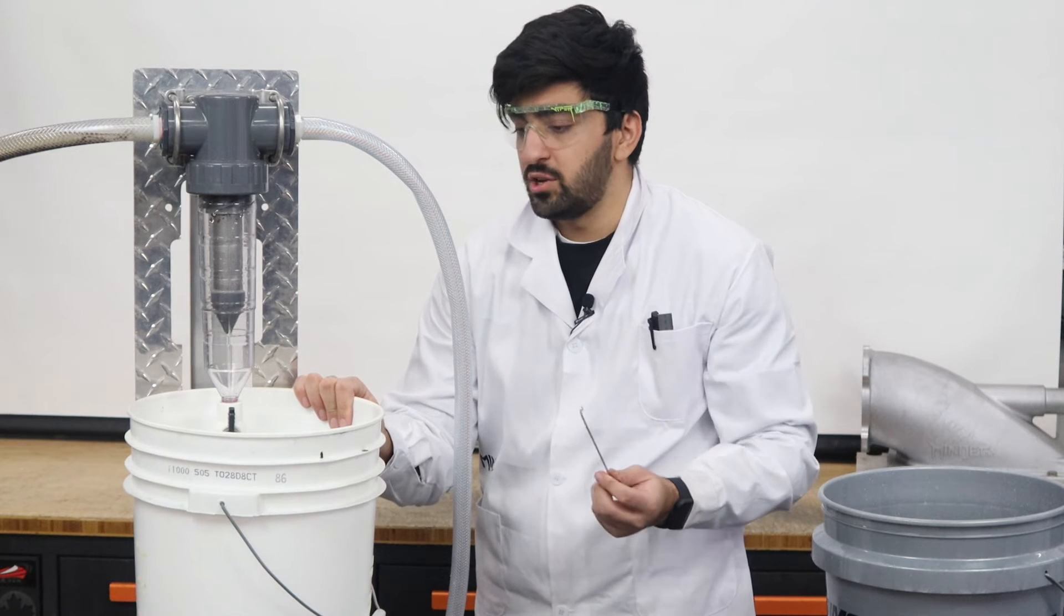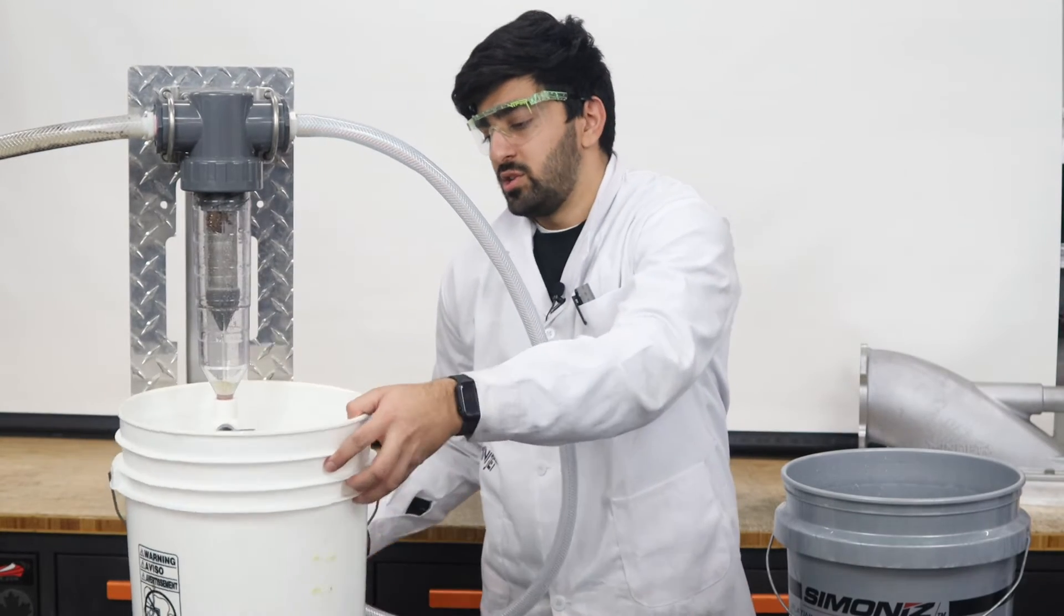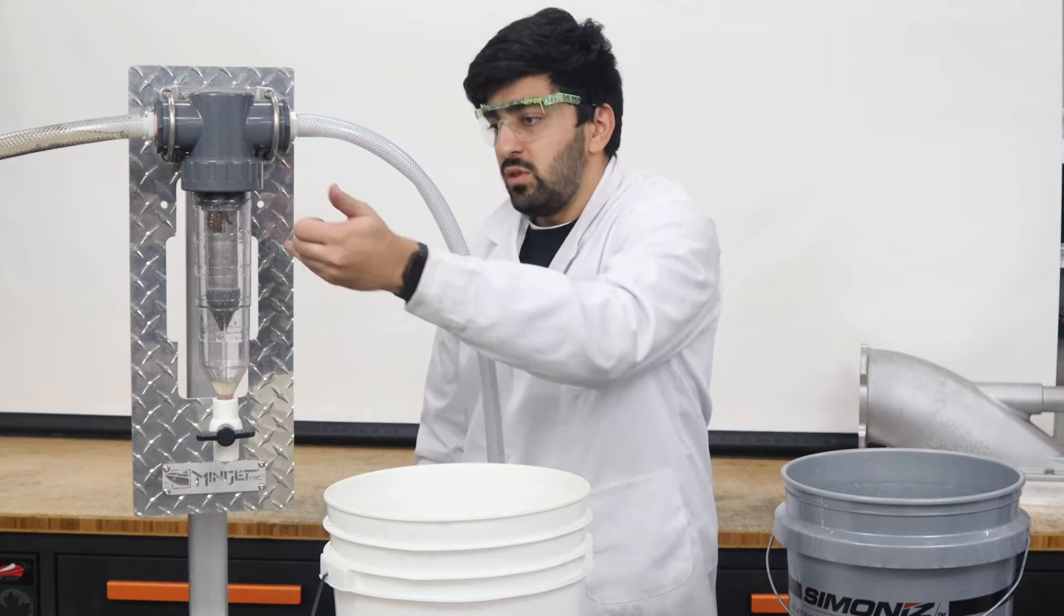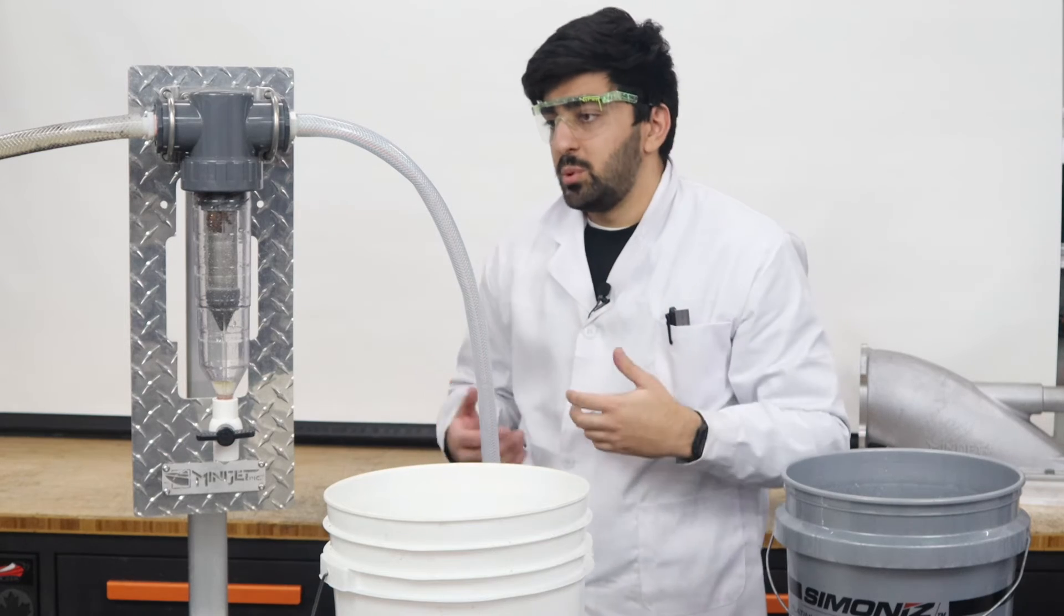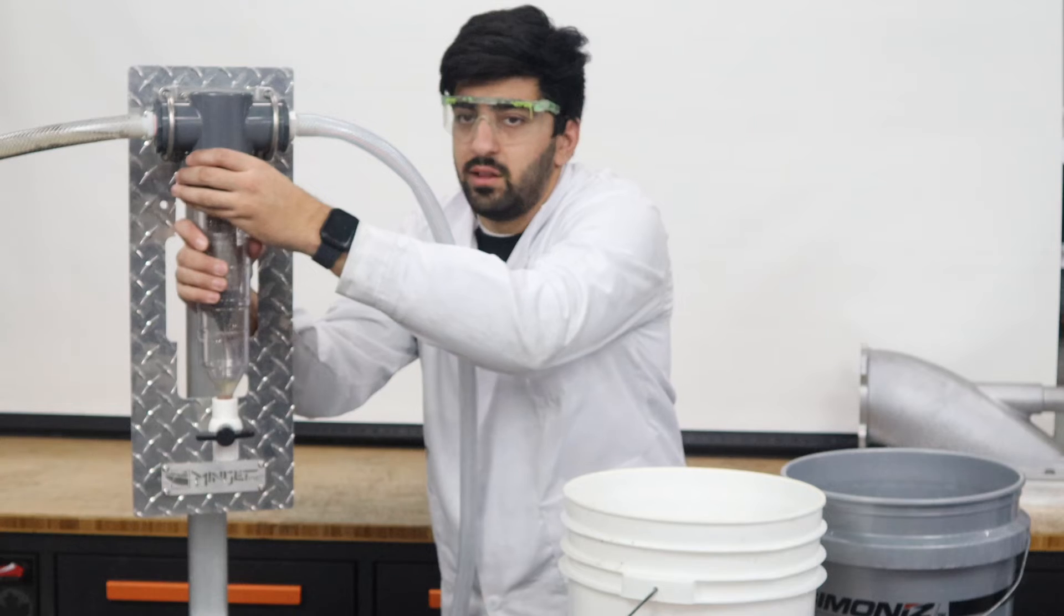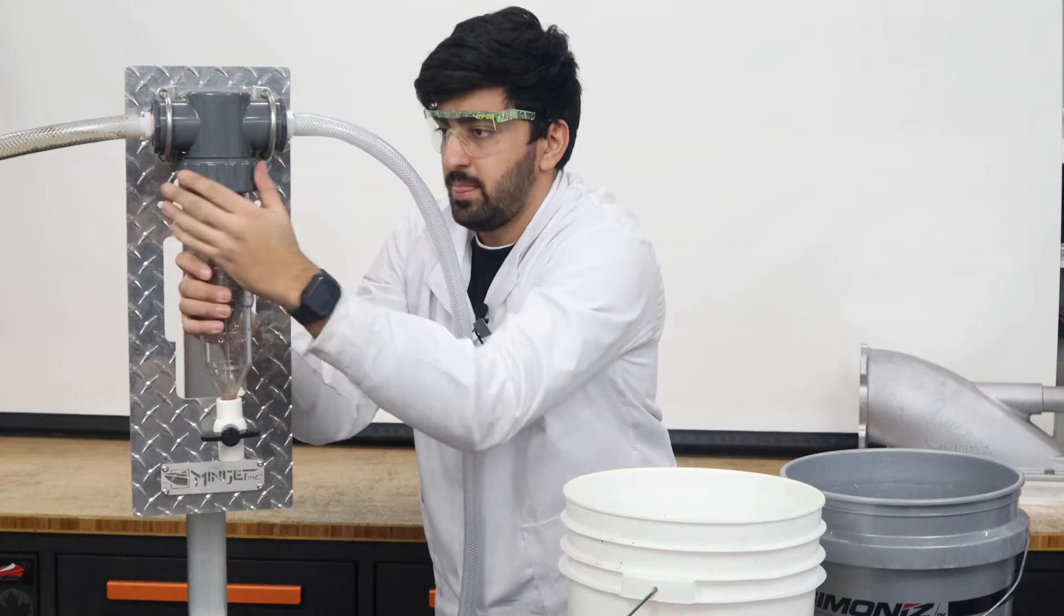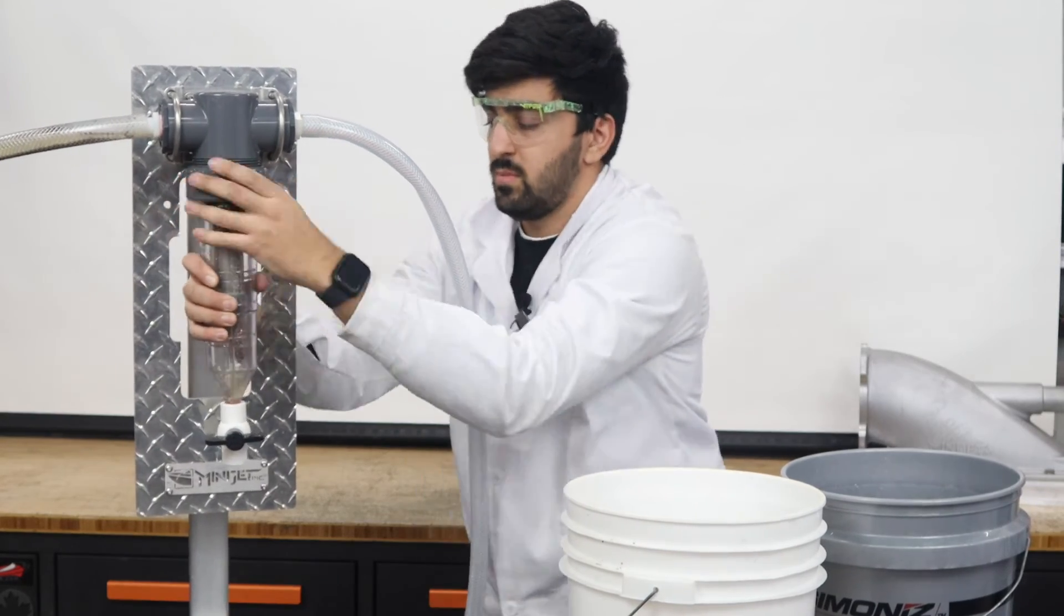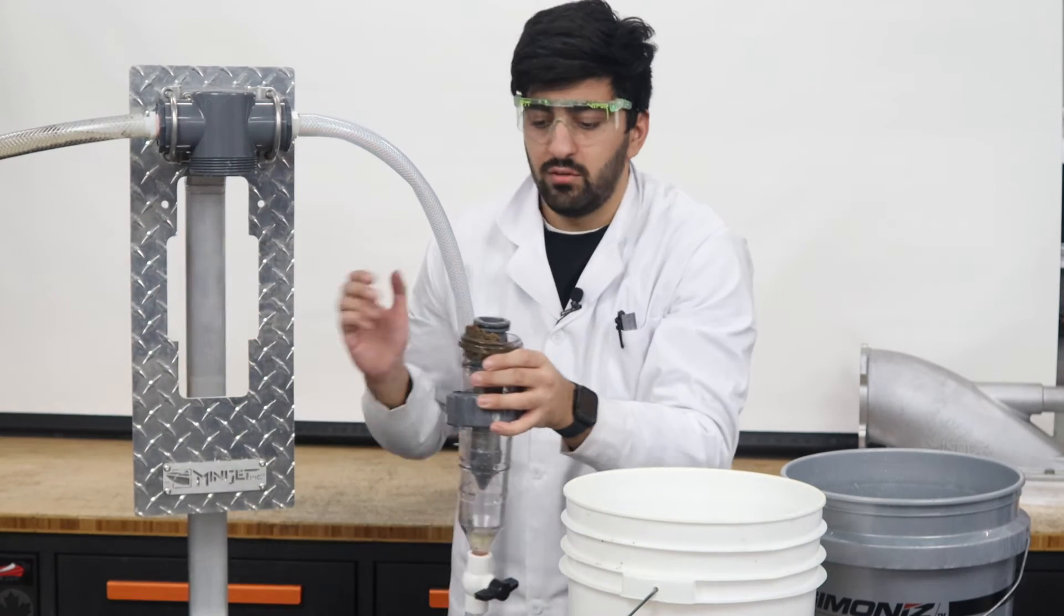So one other really cool feature about the Mini Jet sand trap is it's very easy to take apart. So even though we do have a little bit of extra debris kind of stuck to the walls, very simple to get that out. I'll show that to you right now really quickly. There's this big nut at the top that we can go ahead and remove. And so by doing that, we can pull off the entire filter element.